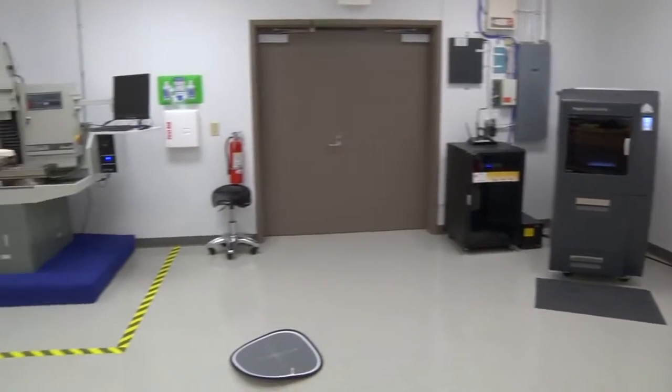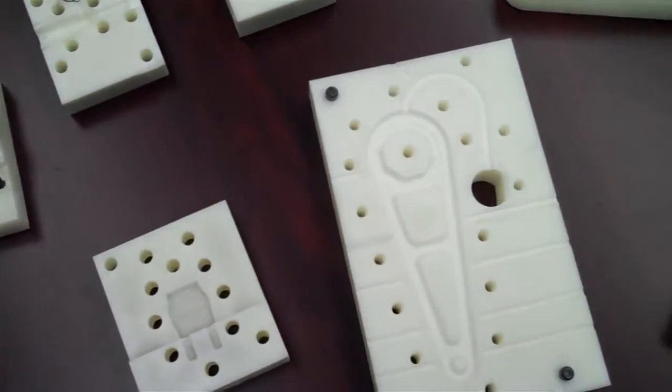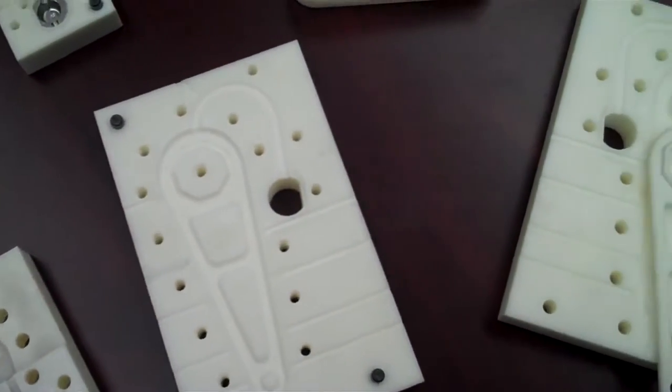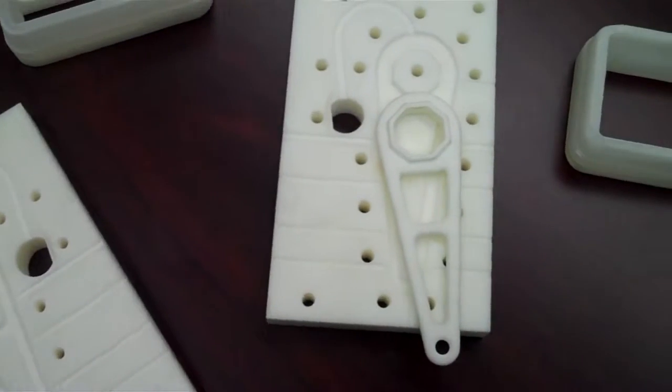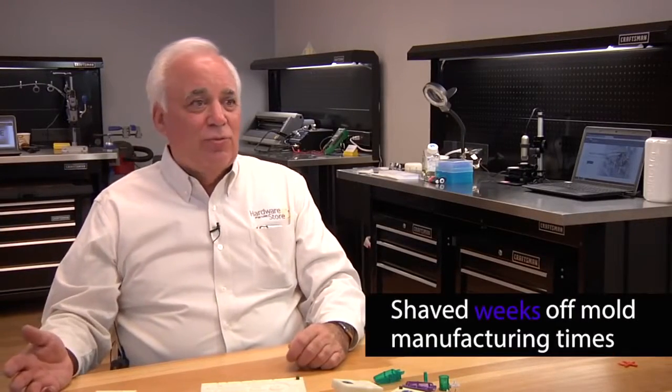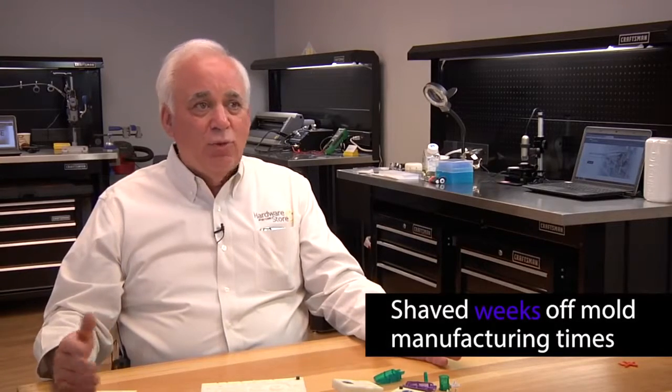Traditionally you want a molded part, you buy a metal mold. It'll take two to three weeks to make it. It'll cost $6,000, $7,000 depending on the part. We were able to take the exact same part and take the manufacturing time for the mold from two to three weeks to a day, 12 hours.